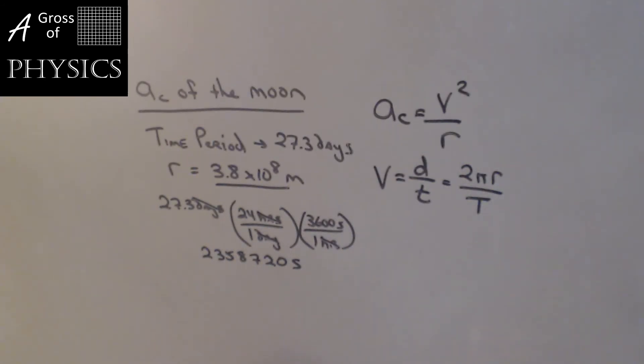If that's the case, now it's just a matter of plugging the numbers in. So v equals 2 pi times 3.8 times 10 to the 8 meters, all over 2,358,720 seconds. To find the speed of the moon, we're going to take 2 times 3.14 times 3.8 EE8, and hit equal, and then divide it by 2,358,720. So the speed of the moon is 1011.7 meters per second. So the moon's traveling over 1,000 meters per second.